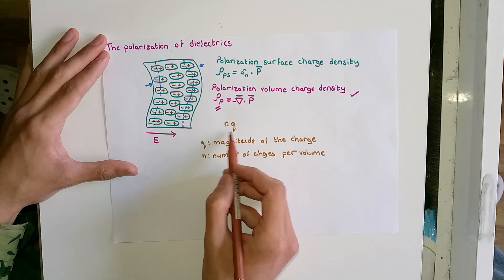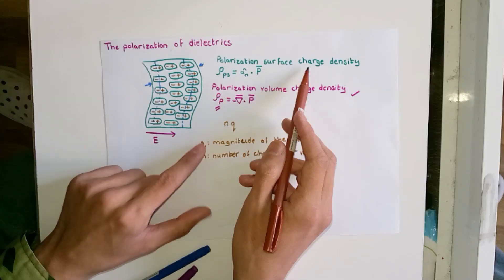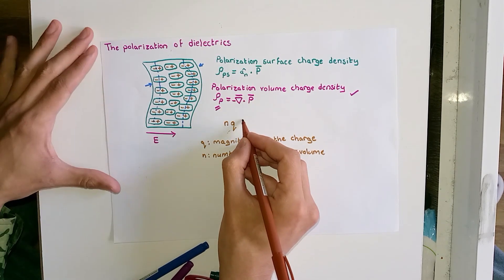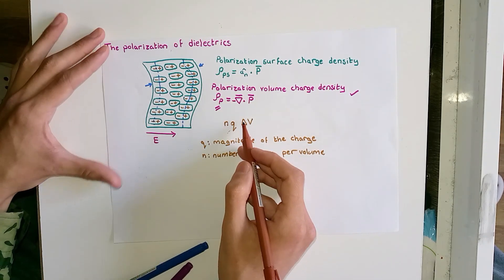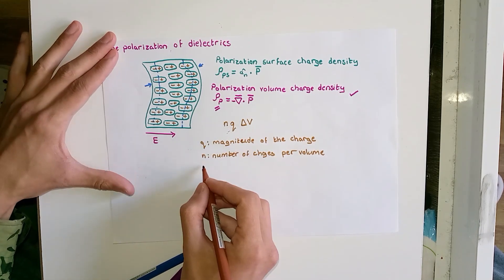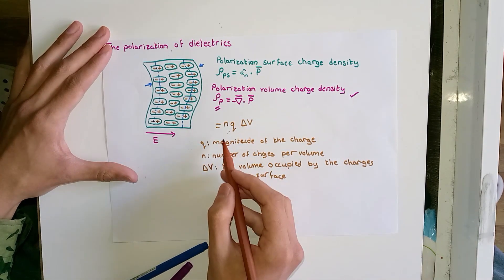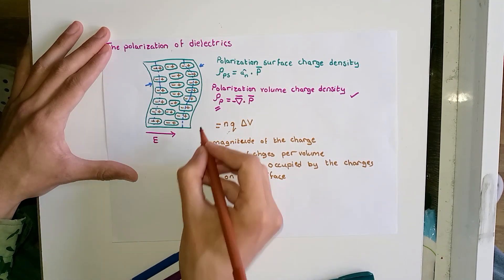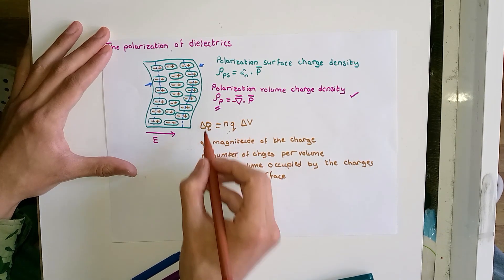Now I want to use the product nq in order to find the total charge crossing the surface of the dielectric. I am going to multiply the charge density nq by the volume delta_v — the volume occupied by the charges on the surface. This whole product will give us the total charge crossing the surface, which I represent by delta_q.